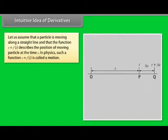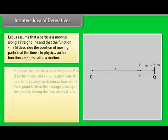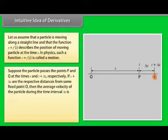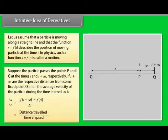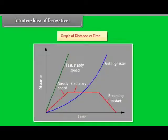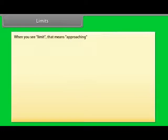Let us assume that a particle is moving along a straight line, and that the function S = f(t) describes the position of the moving particle at time t. In physics, such a function is called a motion. Suppose the particle passes points P and Q at times t and t + Δt respectively. If S + ΔS are the respective distances from some fixed point O, then the average velocity during time interval Δt is ΔS/Δt = [f(t + Δt) − f(t)] / Δt, equal to distance travelled upon time elapsed. Below is the graph of distance versus time.